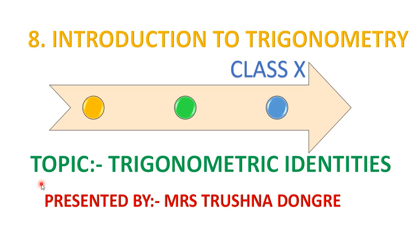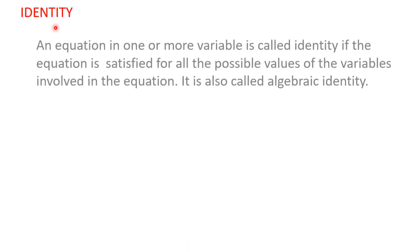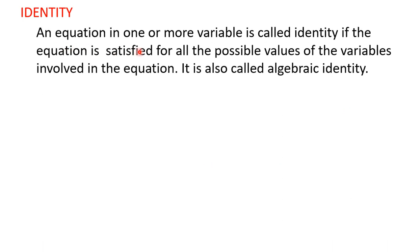Hello students, today we are going to learn trigonometric identities — Chapter 8, Introduction to Trigonometry, Class 10th. Before starting the trigonometric identities, let us revise what an identity is. An equation in one or more variables is called an identity if it satisfies for all possible values of the variable.